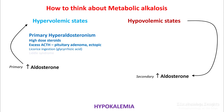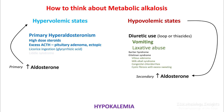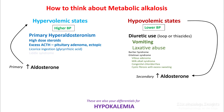In hypovolemic state, aldosterone production is stimulated secondarily, and this would be seen in diuretic use, vomiting, laxative abuse, etc. These etiologies are also a very good differential for hypokalemia. The hypervolemic state will have higher blood pressure while the hypovolemic state will have softer blood pressure.